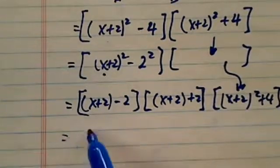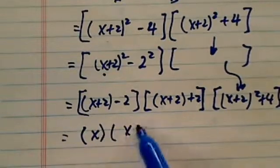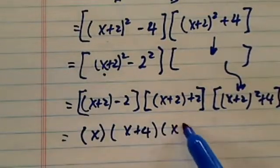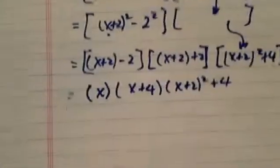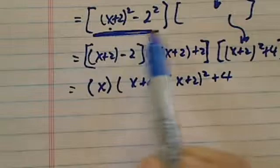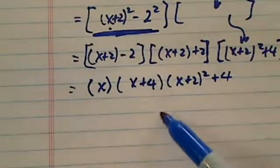Okay, now let's simplify here. The first term becomes x, this is x plus 4, and then x plus 2 squared plus 4. So the trick here is you want to make sure you don't stop over here because there's still a difference of squares.